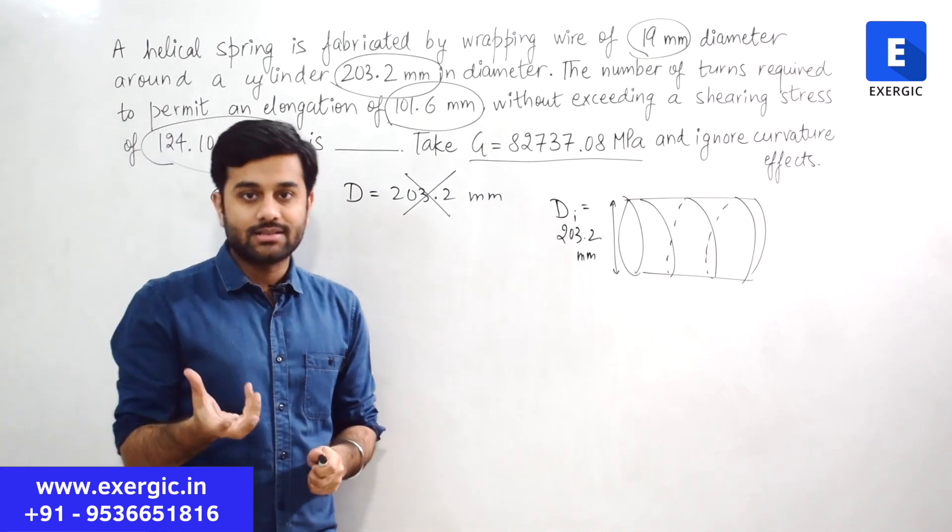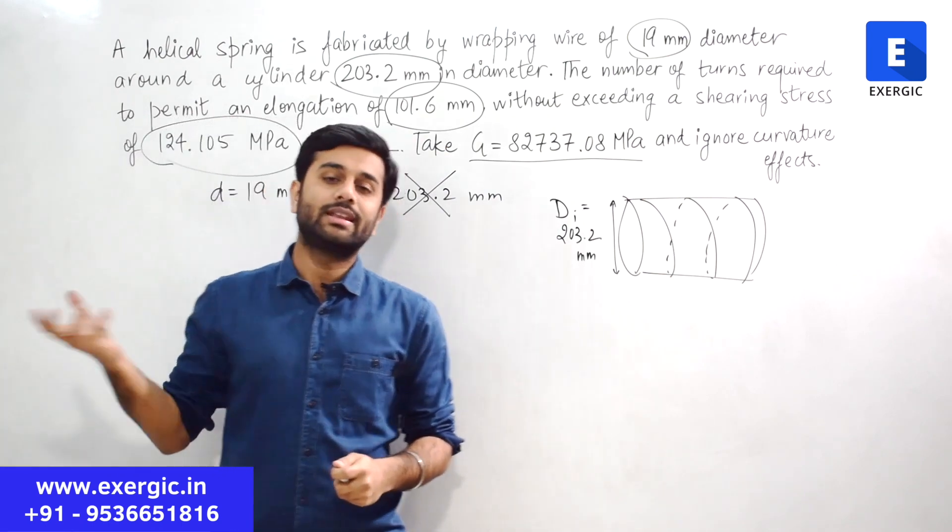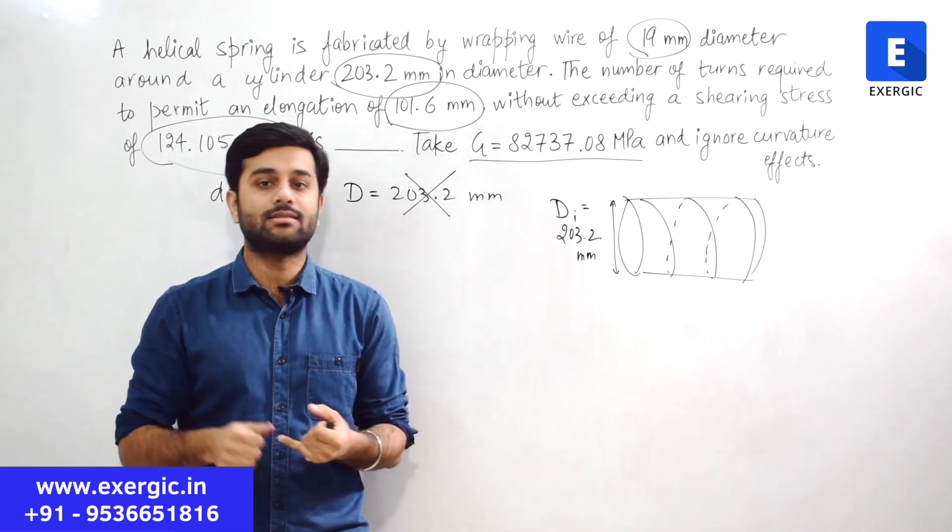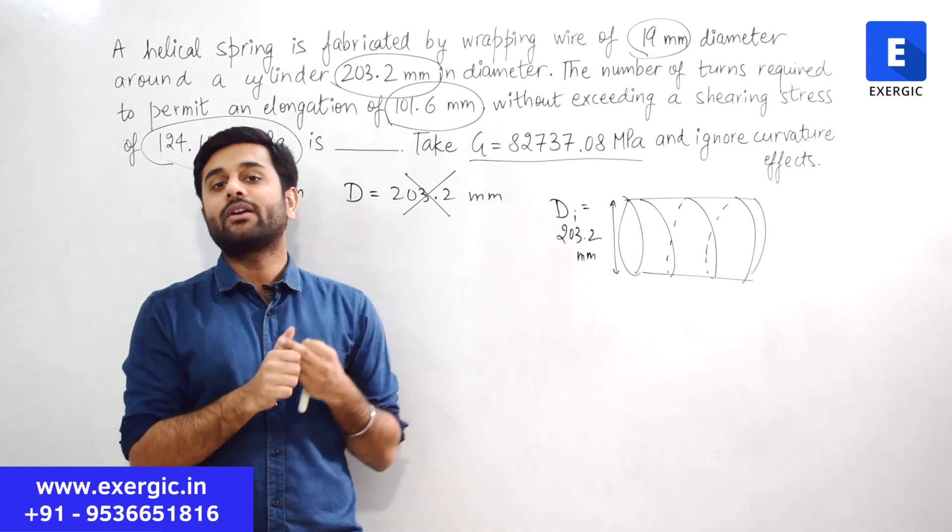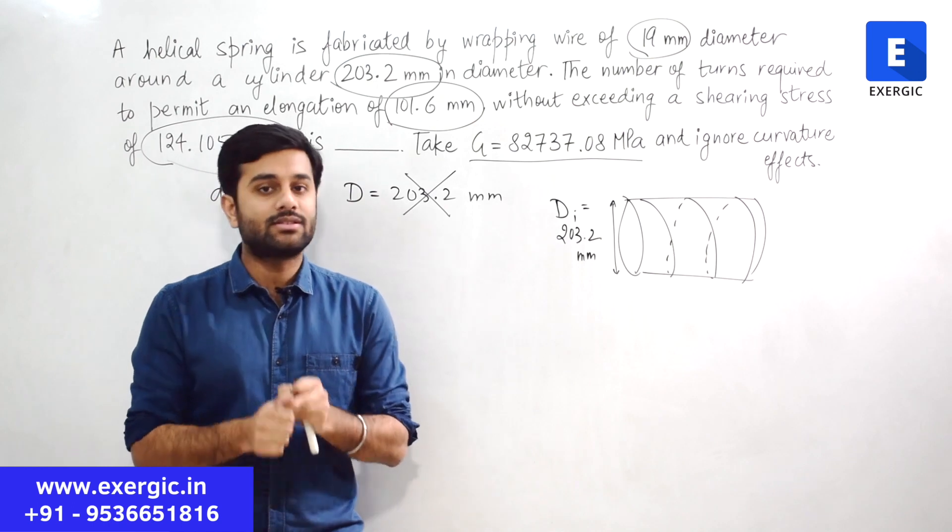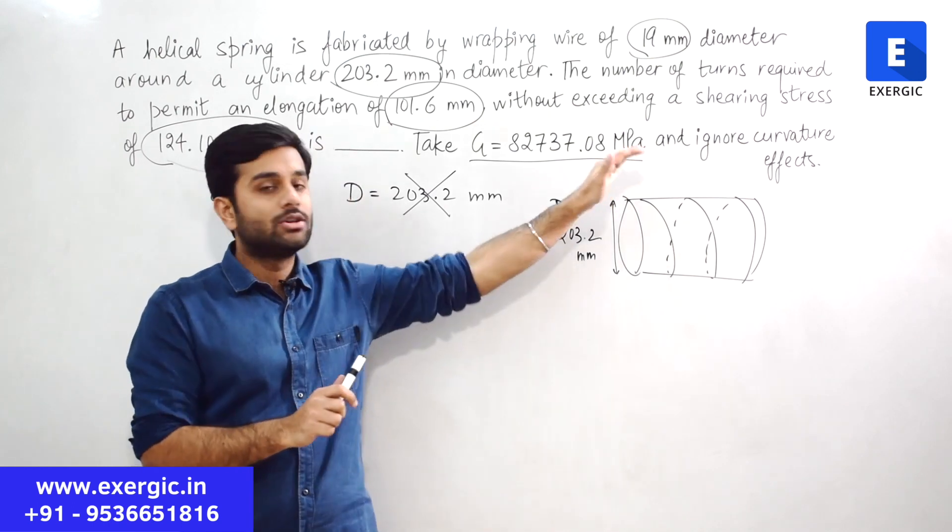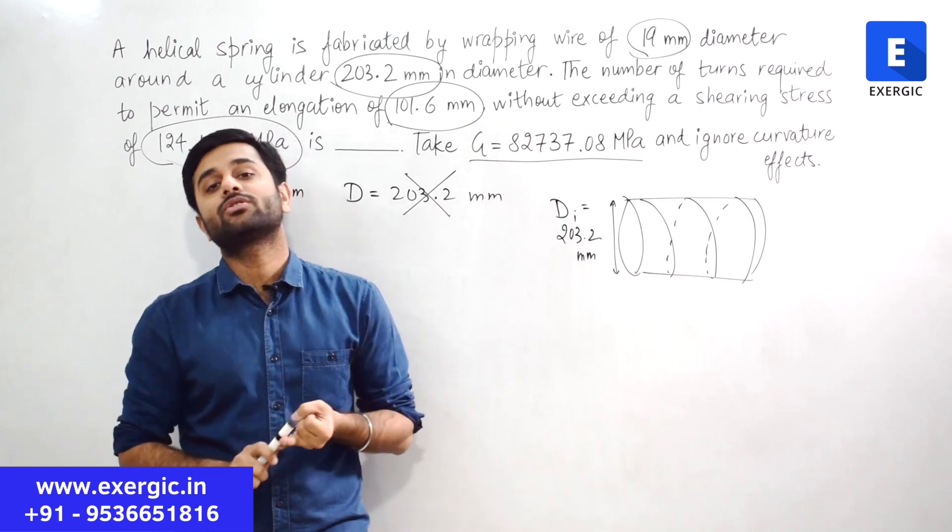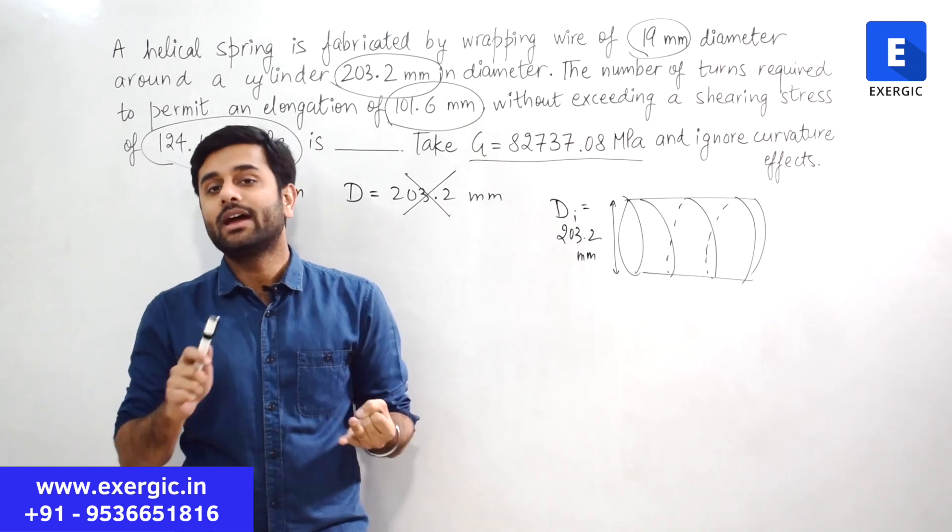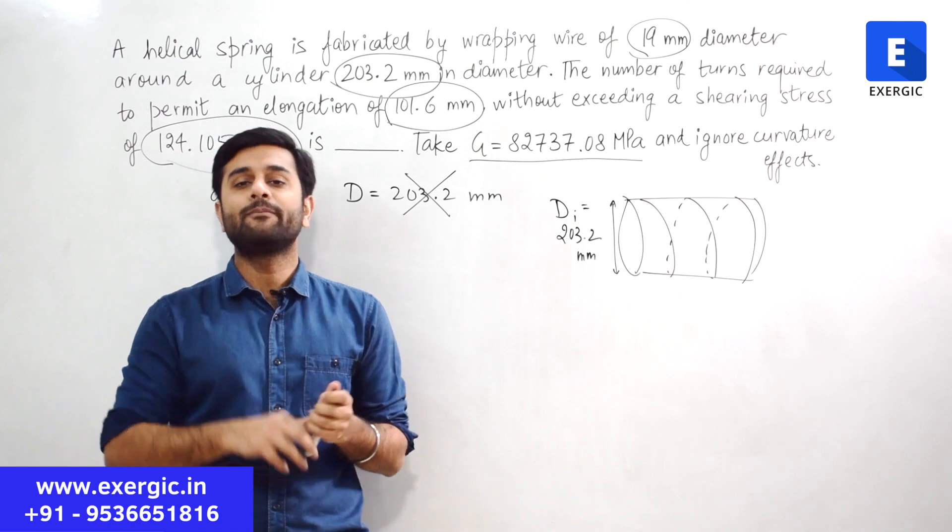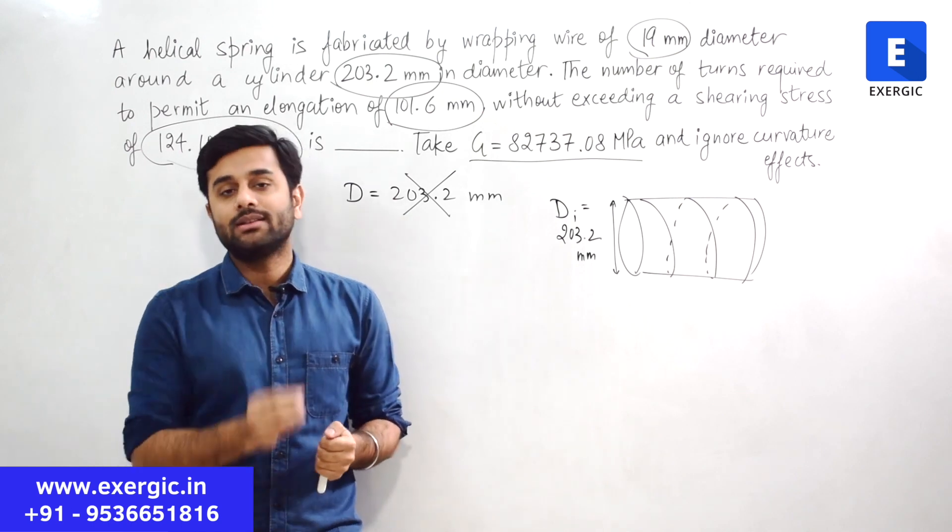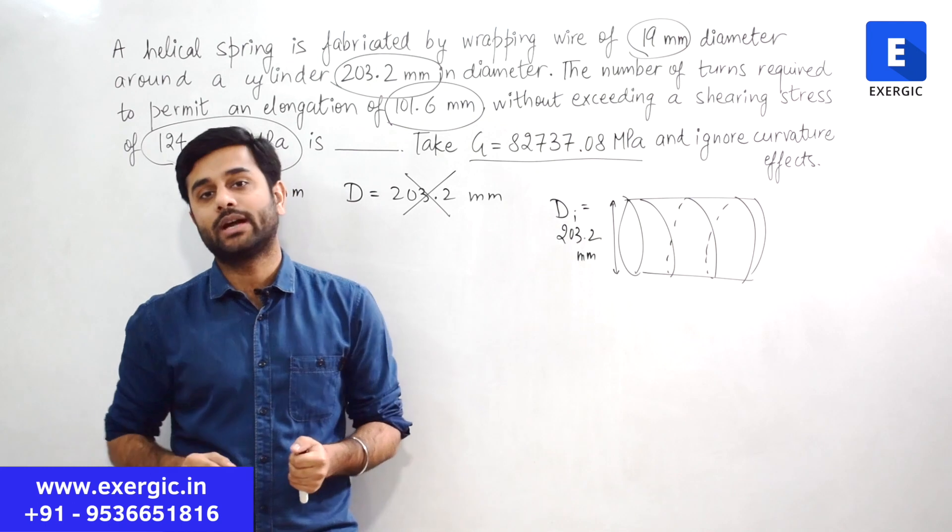We know that shear stress can occur due to three different factors: the direct stress, the torsional stress and due to curvature effects. The stresses due to curvature effect you have to totally ignore as written here. So only direct stress and the torsional stress, direct shear stress and torsional shear stress you have to consider. Using that you can find out the value of shear stress. Let us do that.